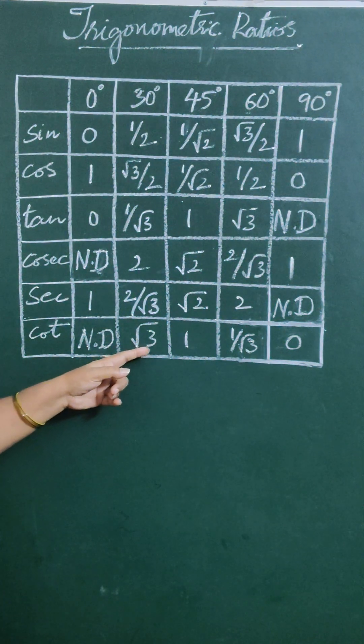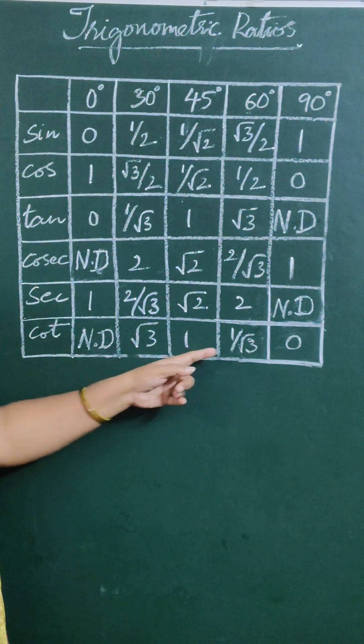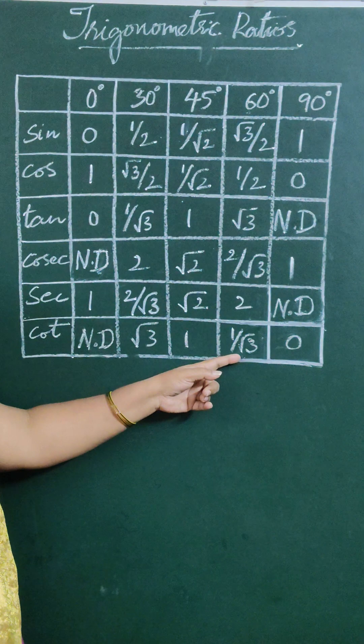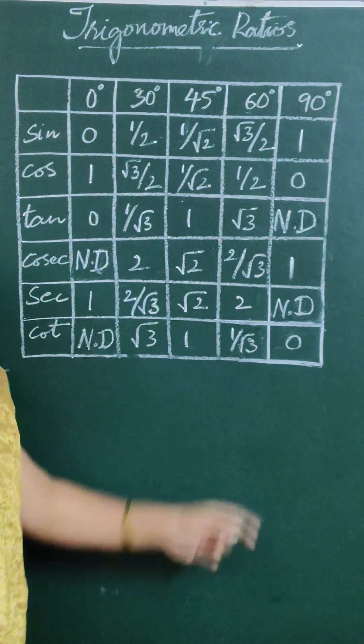cot 0° is not defined, cot 30° = √3, cot 45° = 1, cot 60° = 1/√3, cot 90° = 0.